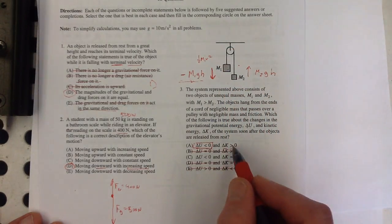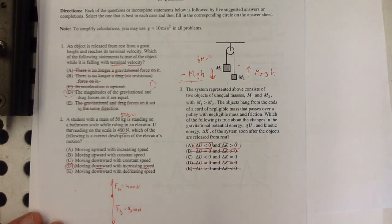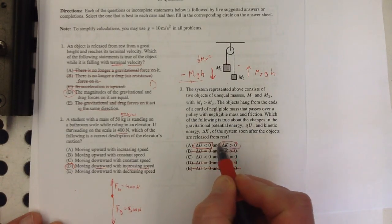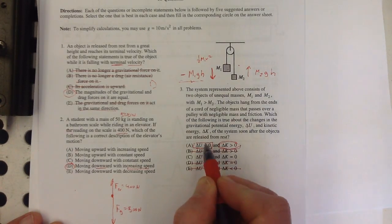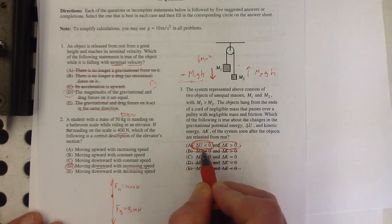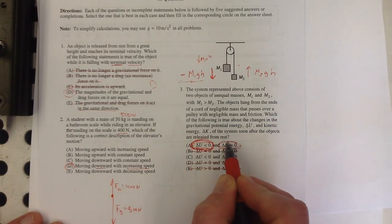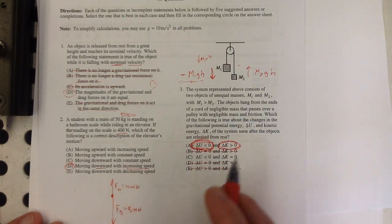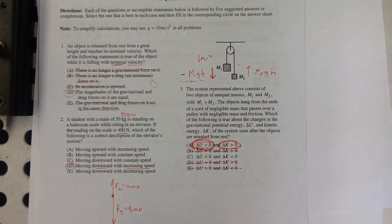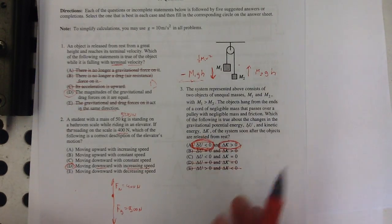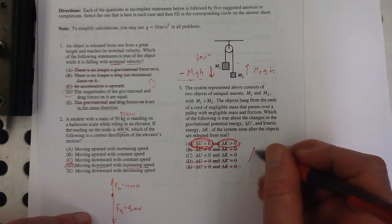So this is gonna have one half M1 V squared. It's gonna go from zero to something, so it's gonna increase. And of course the amount that this increases is precisely equal to the amount that this decreases. A decrease in this leads to a gain in this because mechanical energy would be conserved here. There are no non-conservative forces, no friction or nothing. So that's A.